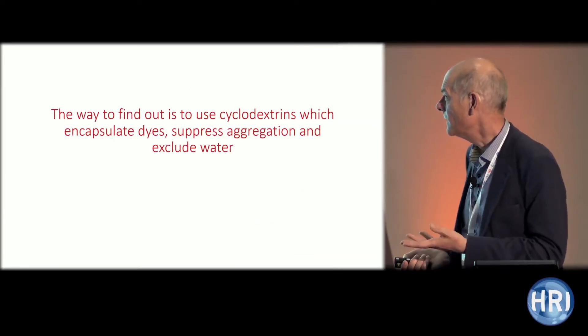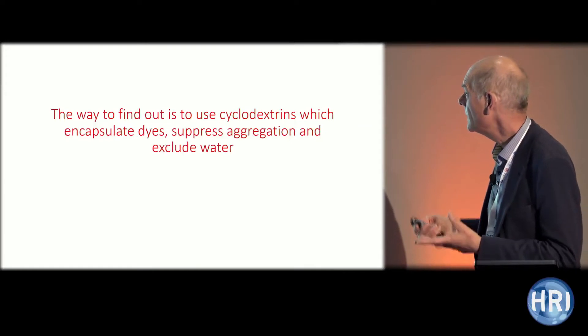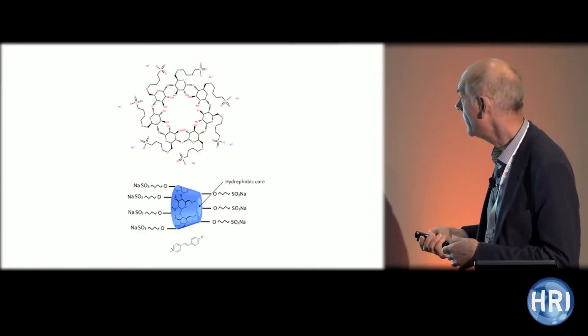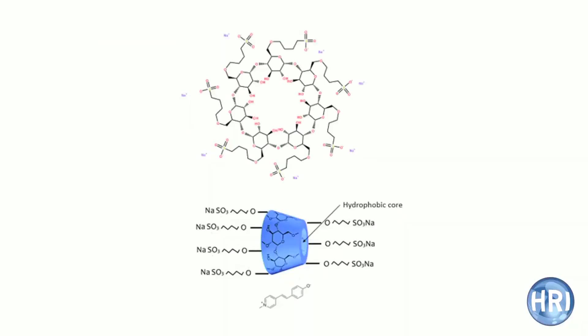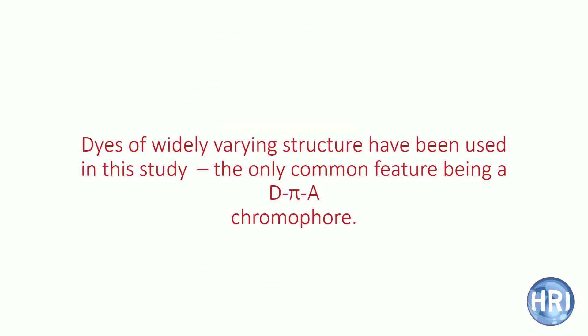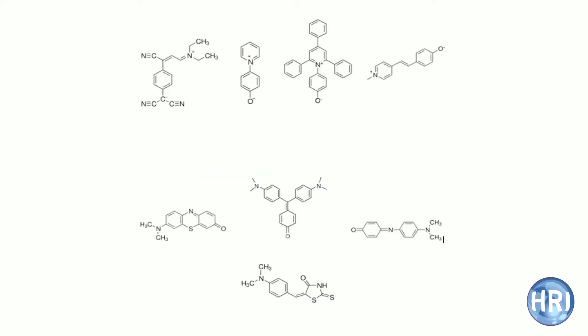The way to ask this question is to use cyclodextrins — soluble encapsulators. Basically, the dye goes into the middle of this encapsulator and sits in a hydrophobic environment with no water, protected from the solvent. Dyes of widely varying structure can be examined, with the only common feature being the donor, acceptor, and electron bridge in between.